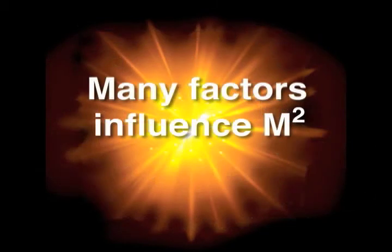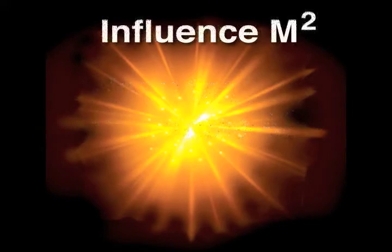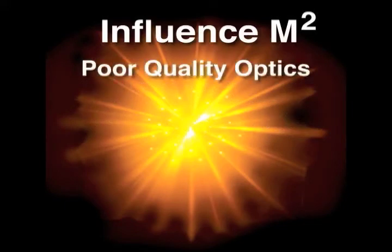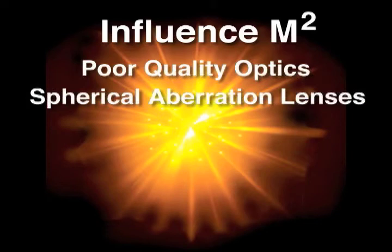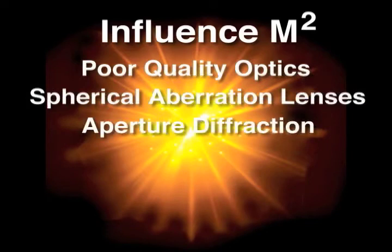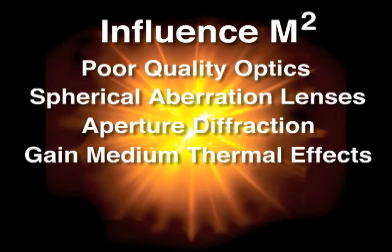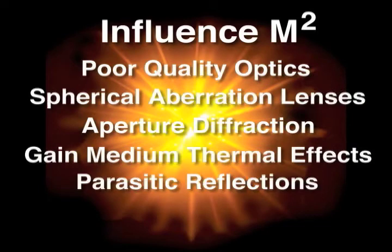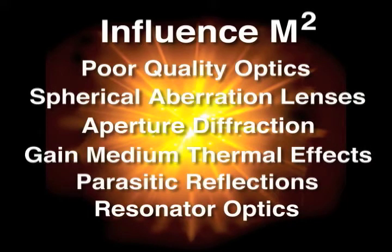There are many factors that influence the beam profile and m squared of a laser. For example, poor quality optics, spherical aberration of lenses, diffraction caused by apertures, thermal effects of the gain medium, and parasitic reflections may all degrade the quality of the laser beam. The alignment and quality of the optics of the laser resonator, as well as of the optical train in use once the laser beam has emerged from the cavity, can all affect beam quality.